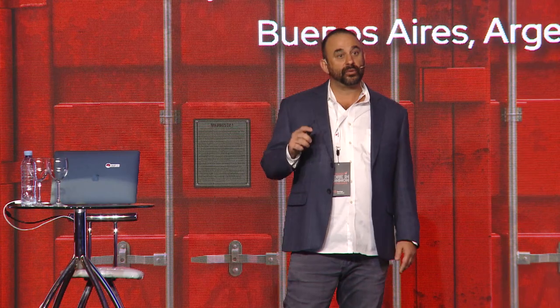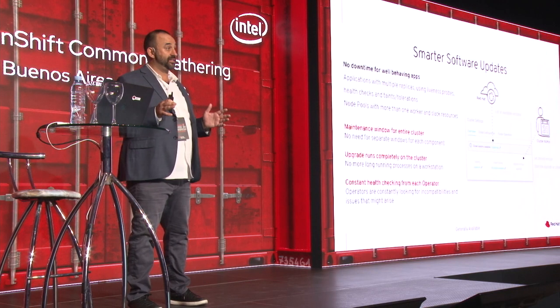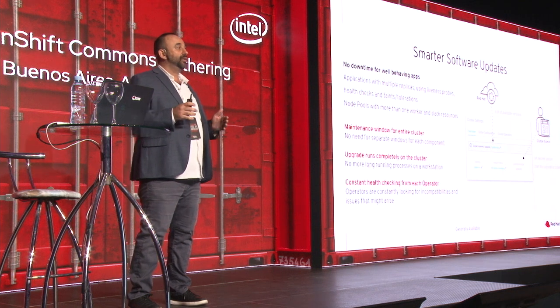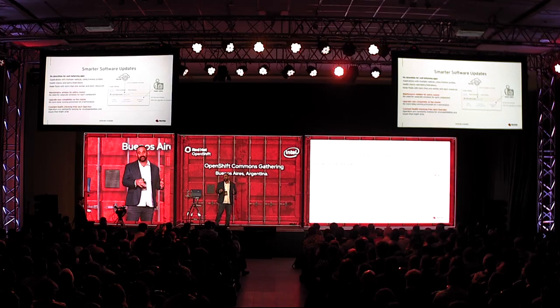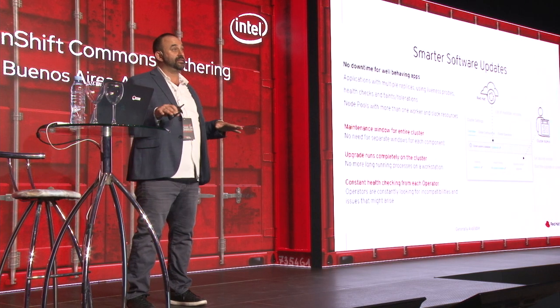Because we use operators and RHEL CoreOS — which is immutable — we know the state of the cluster at any given time. That means we can reliably take the cluster from state A to state B. We have something called the Cluster Version Operator, a master operator that manages all underlying infrastructure and core operators making up Kubernetes and OpenShift and maintains their versioning. So upgrading from 4.1 to 4.2 or any patch release can now be done very easily.